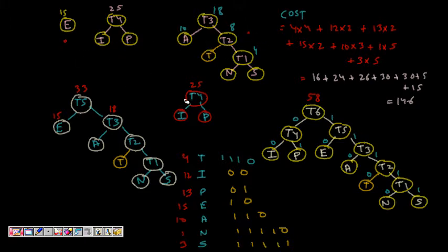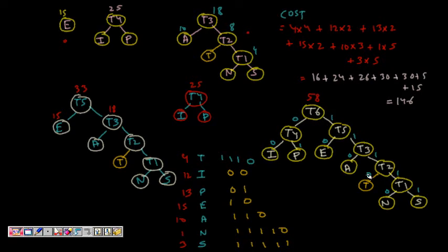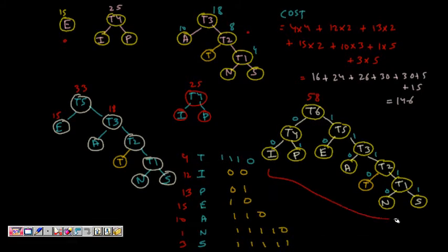We merge them, we make our T5. E is its left child, T3 is its right child. Now T4 is there, T5 is there. These two trees are there. We merge them, we get T6. Weight is total weight of 33 plus 25, 58. And now we form the tree. So T4 is the left child, T5 is the right child. This is the final tree.